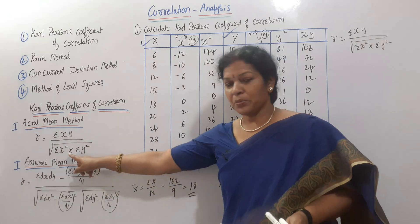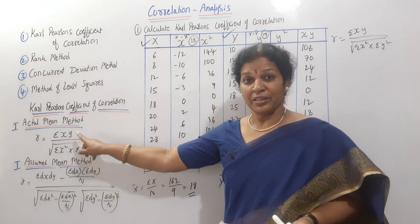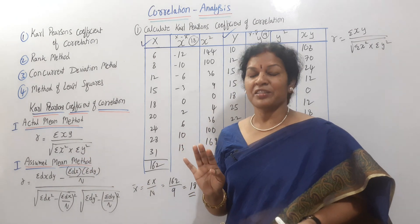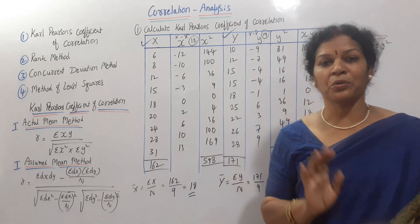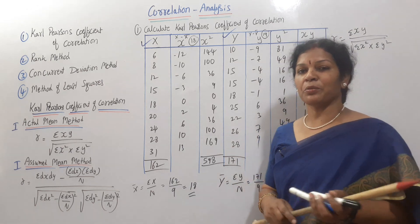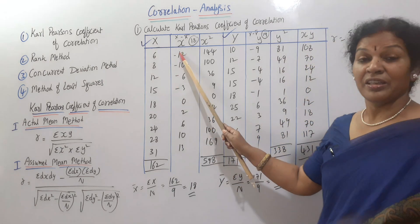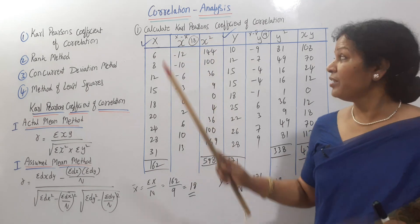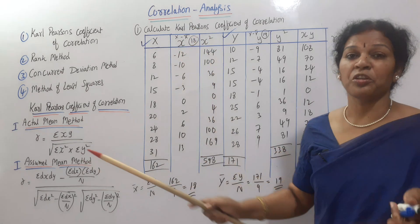We have the data with X and Y values. We will calculate x into y. We are using the actual mean method, so we compute small x as x minus x-bar.